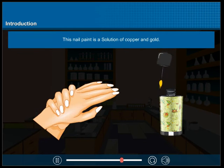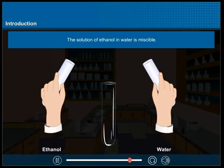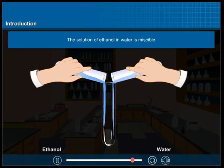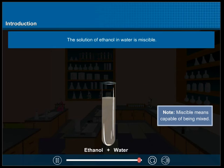This nail paint is a solution of copper and gold. The solution of ethanol in water is miscible. Note, miscible means capable of being mixed.